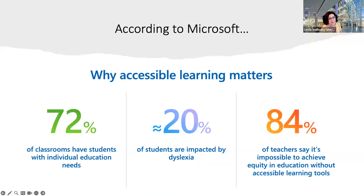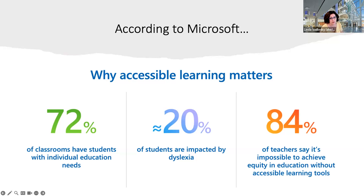Microsoft's website has a graphic on why accessible learning matters. They state that 72% of classrooms have students with individual education needs, 20% of students are impacted by dyslexia, and 84% of teachers say it's impossible to achieve equity in education without accessible learning tools. So we have these tools at our fingertips — we just need to find them, use them, and hopefully they will improve the quality and accessibility of materials for everybody.